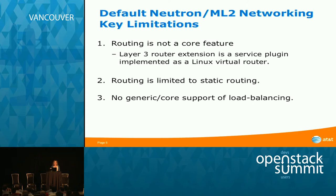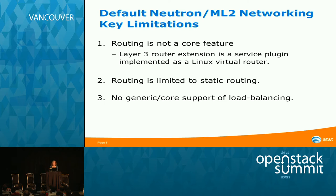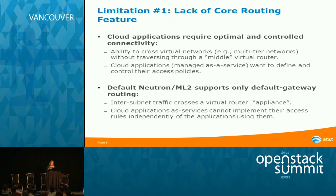Second, routing is limited to static routing right now. This is being addressed since dynamic routing is being introduced into Neutron, but it's still in the context of the Linux virtual router, so the first problem is not addressed. Third, because routing is not a core feature, ECMP load balancing is also not a core feature. Load Balancer as a Service does not have infinite capacity — eventually you have to load balance to the load balancer — so you need core load balancing functionality.